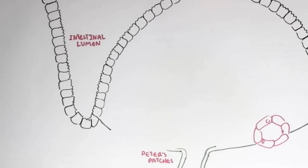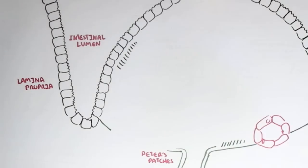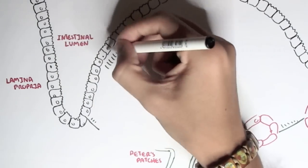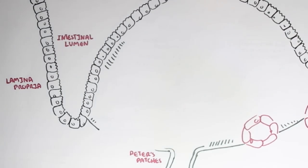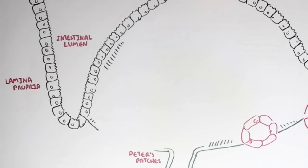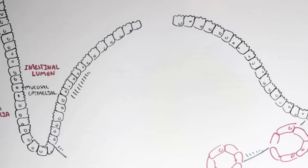Peyer's patches are important in protecting the body from invasion and in initiating an immune response. Another important area is known as the lamina propria, which is also below the mucosal surface. Lamina propria is basically connective tissue which has many types of immune cells, particularly the activated immune cells such as the CD8 and CD4 T cells. Now let's talk about Peyer's patches in a bit more detail.